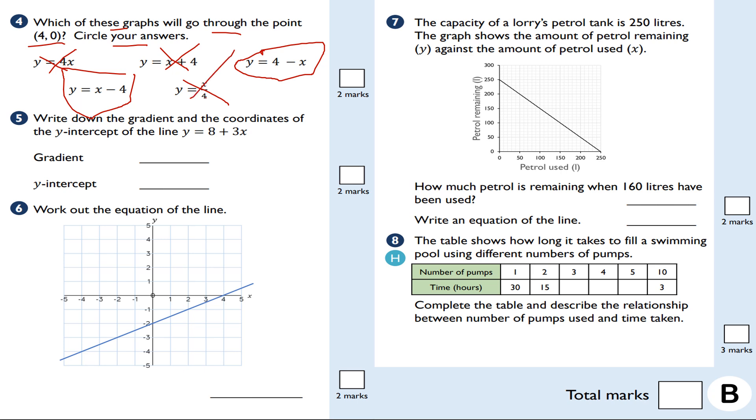Question number five. Write down the gradient and the coordinates of the y-intercept of the line y equals 8 plus 3x. So, let's write it in the form y equals mx plus c. So, let's write it as y equals 3x plus 8. So, the gradient is the coefficient of x. The number in front of the x, the number next to x, is equal to 3. And the y-intercept is positive 8. So, y equals mx plus c. m is your gradient and c is your y-intercept. So, where it crosses on the y-axis.